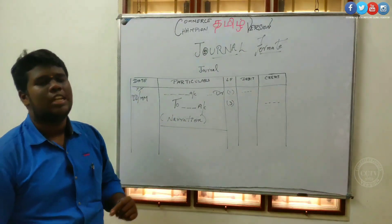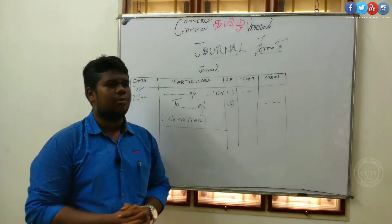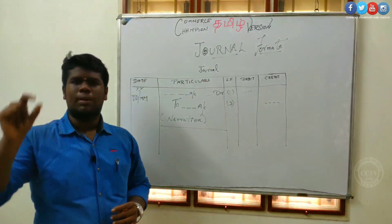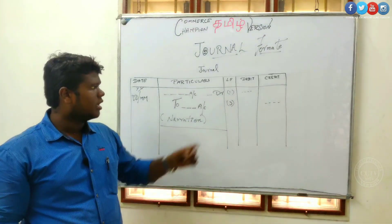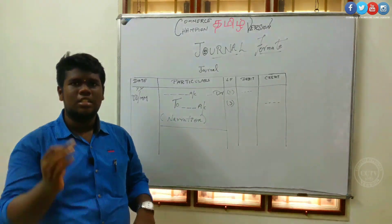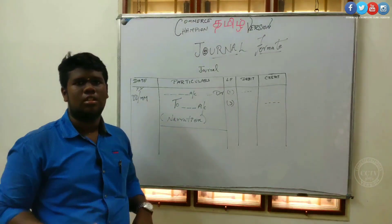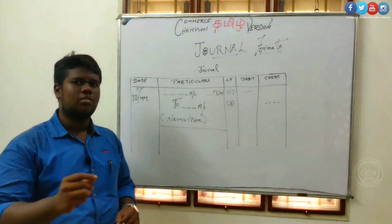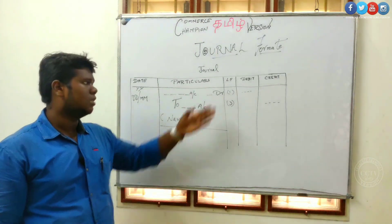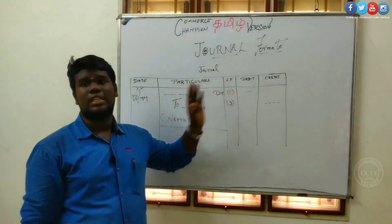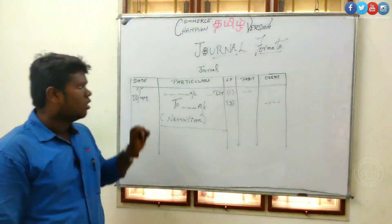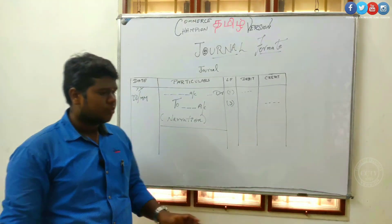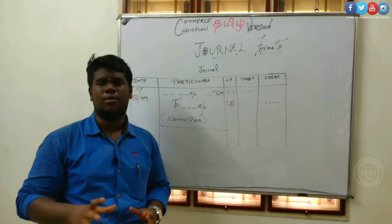Ledger folio — if you have a ledger folio, you can get a page number in the ledger account. If you have a number, you can get a cash or furniture reference. If you have a page number, you can get the number in the ledger. That name is ledger folio. If you have the format, let's go to the main entries.